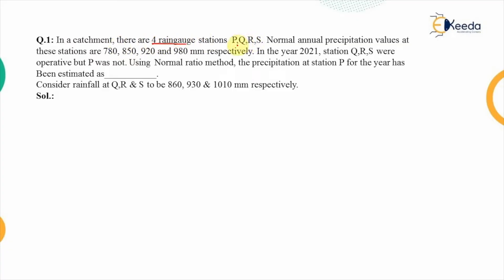The first problem says that in a catchment there are four rain gauge stations named P, Q, R, and S. The normal annual precipitation values at these stations are 780 mm, 850 mm, 920 mm, and 980 mm respectively. These normal annual precipitation values are the averaged values for the particular stations over the past 30 years of data.